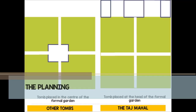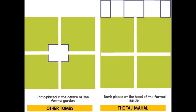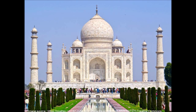Generally, the tomb was placed in the center of the formal garden, as we see in Humayun's tomb. But in the Taj Mahal, the builders decided to place the tomb at the head of the formal garden. This resulted in a larger foreground in front, giving a very different dimension to the Taj Mahal and adding depth and a perspective effect altogether.